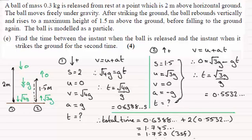Just by using S equals UT plus a half AT squared. So maybe you might want to give that a try and you should get twice this value for the time.